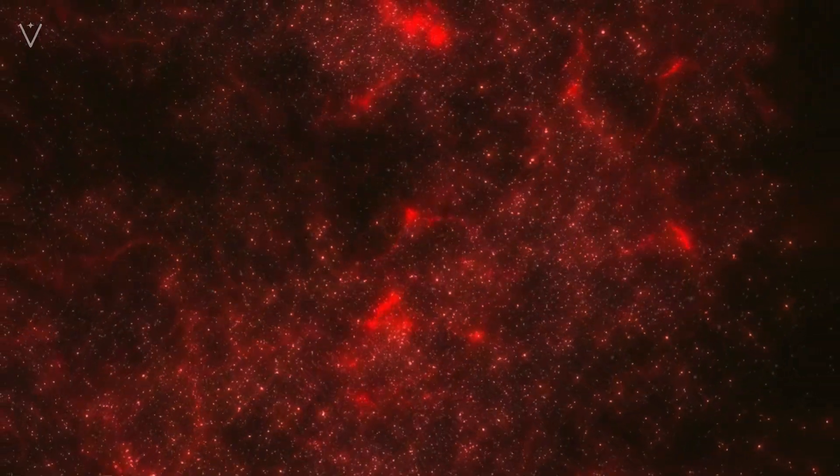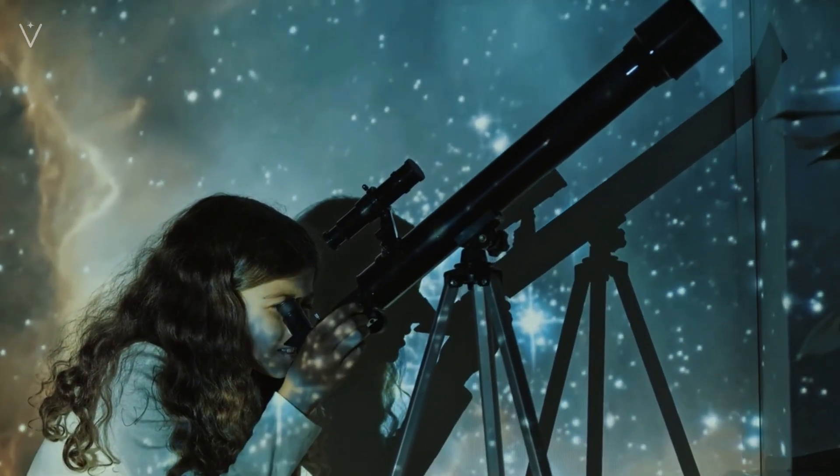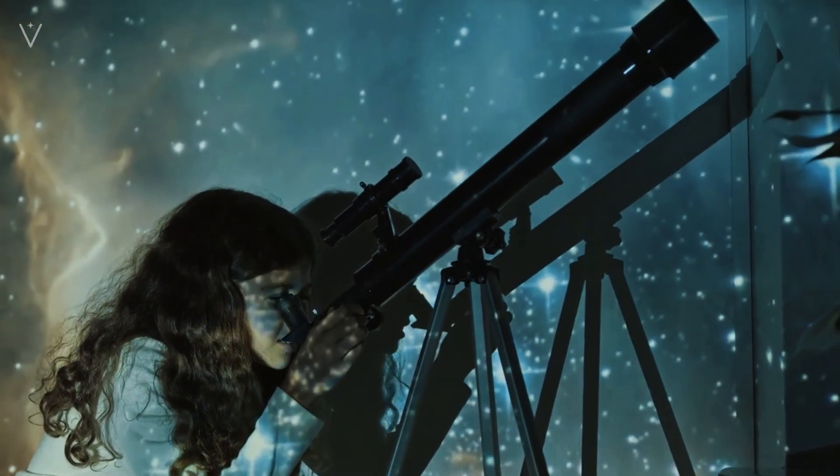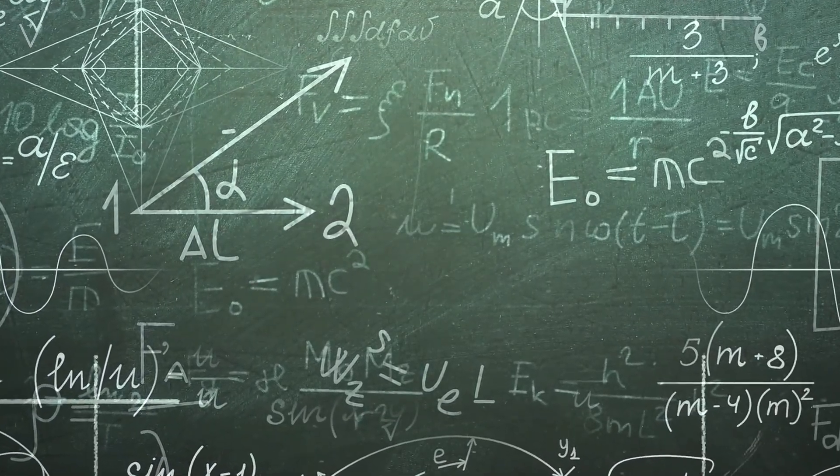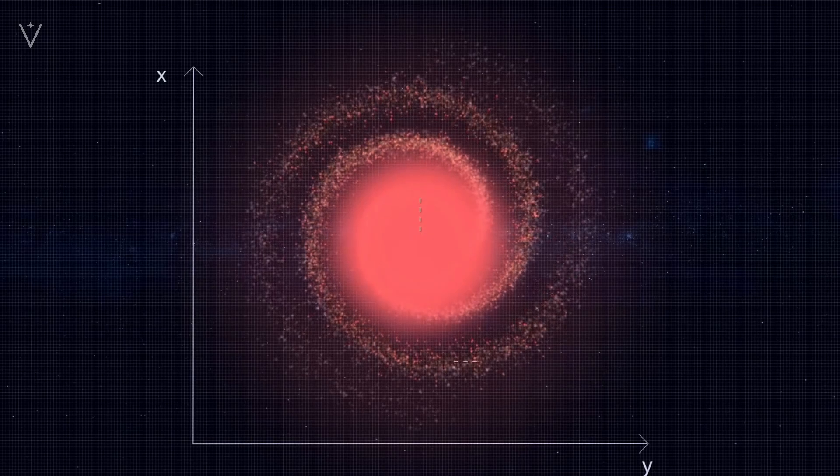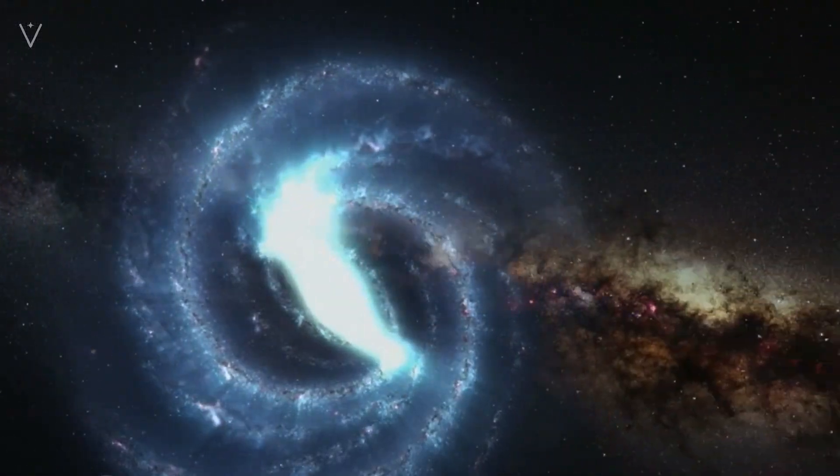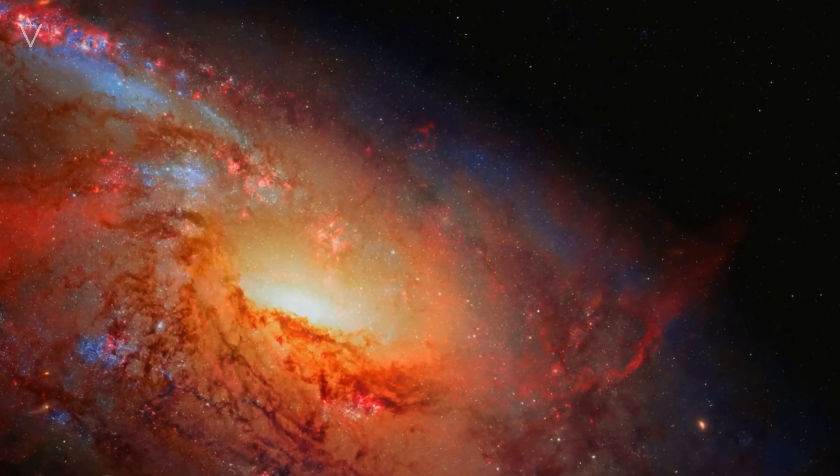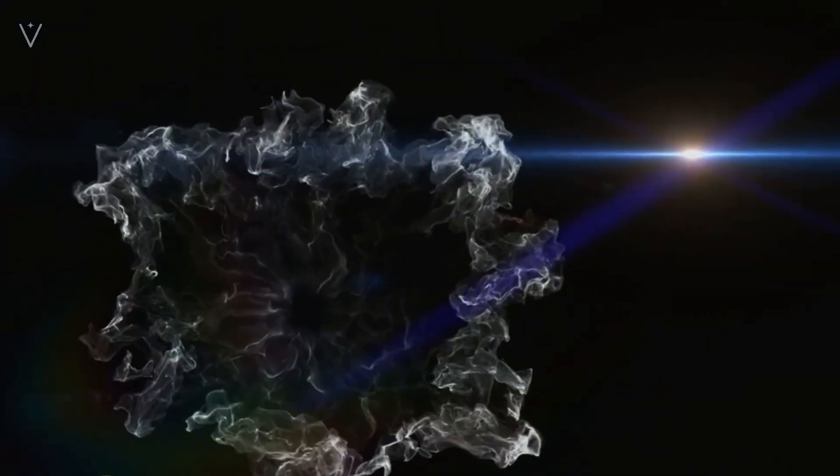The story of dark matter and dark energy is a story of scientific detective work. It all started in the 1930s with an astronomer named Fritz Zwicky. He was studying the motion of galaxies in a cluster and noticed something strange. The galaxies were moving too fast. There wasn't enough visible matter to hold them together. He proposed that there must be some dunkle materie, or dark matter, present.